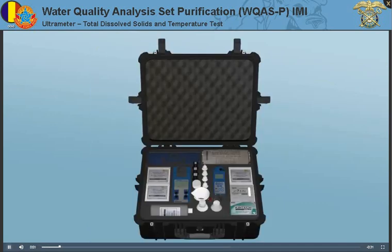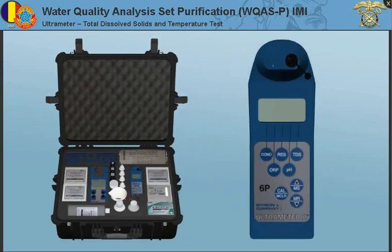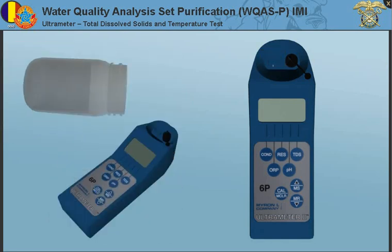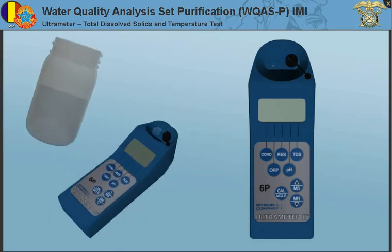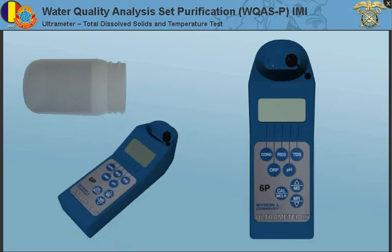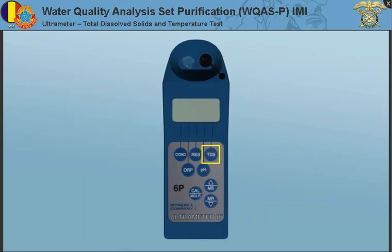To measure the total dissolved solids, or TDS, in a water sample using the ultrometer, rinse out the cell cup — which is the well on the top left of the meter — three times with the sample water to be tested. When rinsed, refill the cell cup with the sample water and press the TDS key.